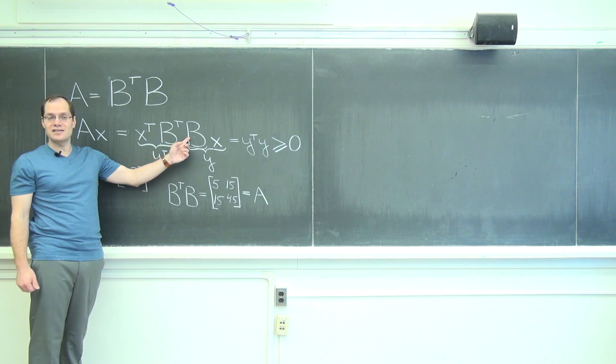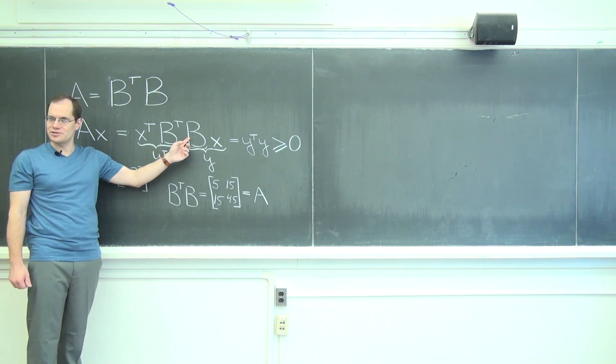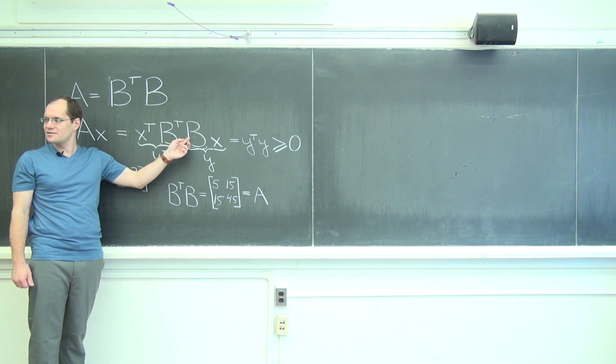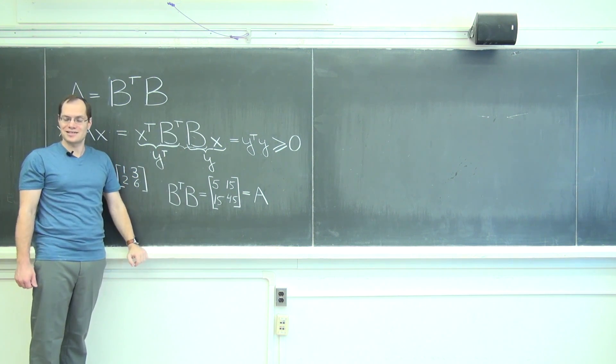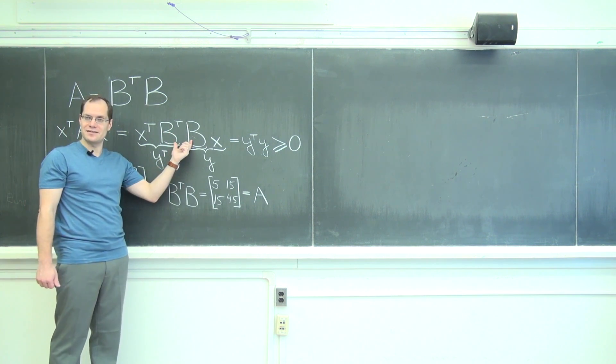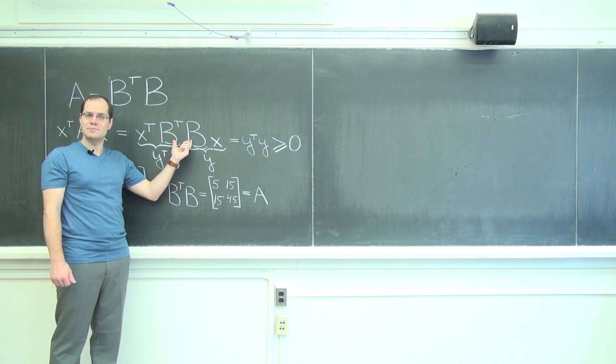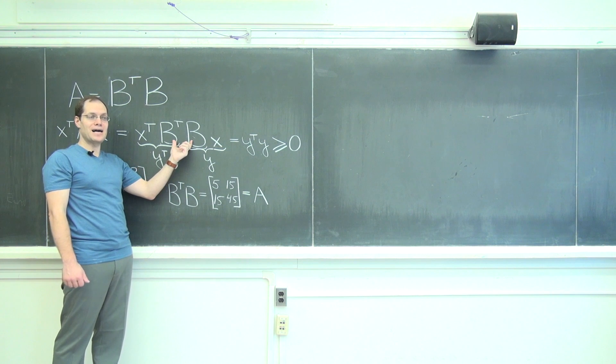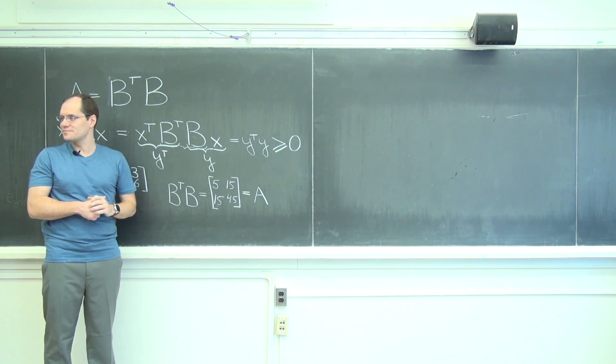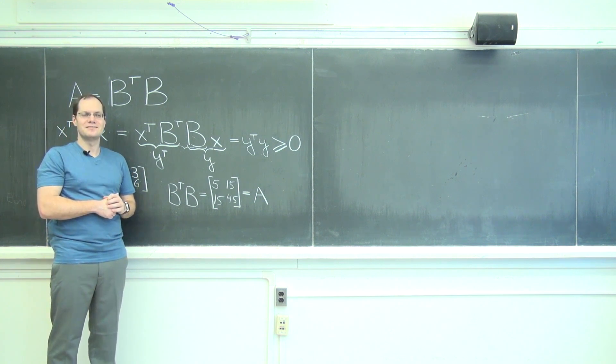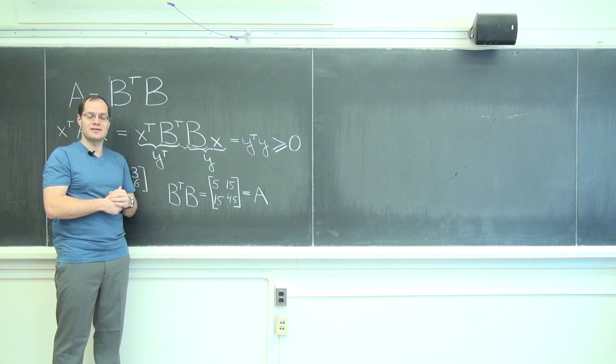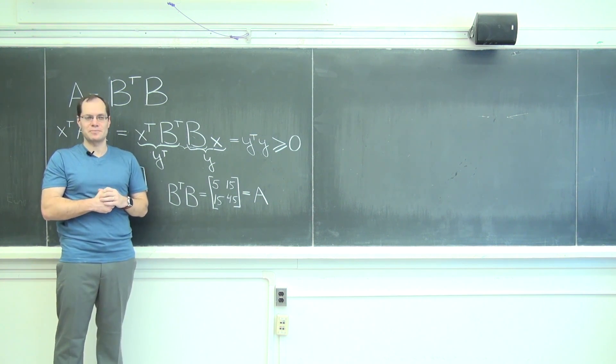So in summary, B transpose B is always symmetric and is guaranteed to be positive semi-definite, not surprising for something that looks like a square. But it will be in fact positive definite if it has linearly independent columns, and it will be positive semi-definite if it has linearly dependent columns. Okay, that's a good step towards many of the other criteria for positive definiteness for symmetric matrices.